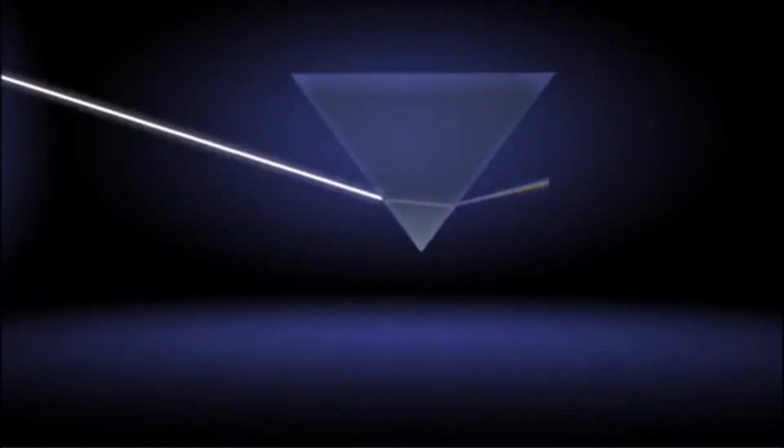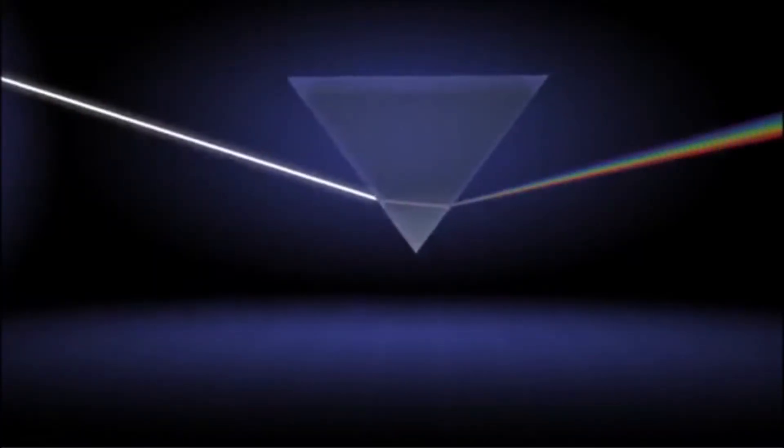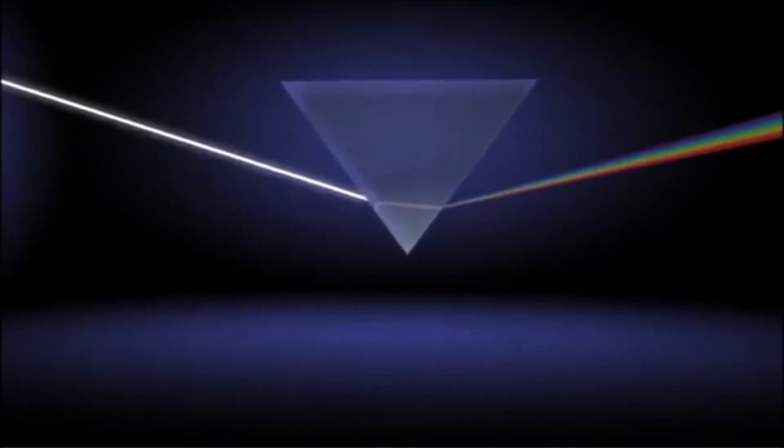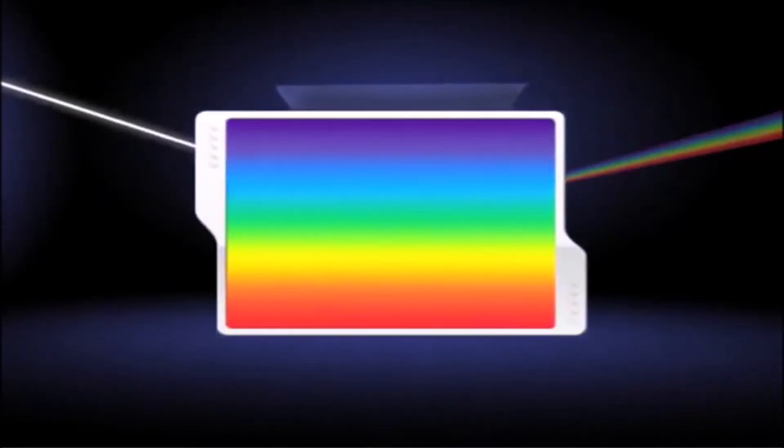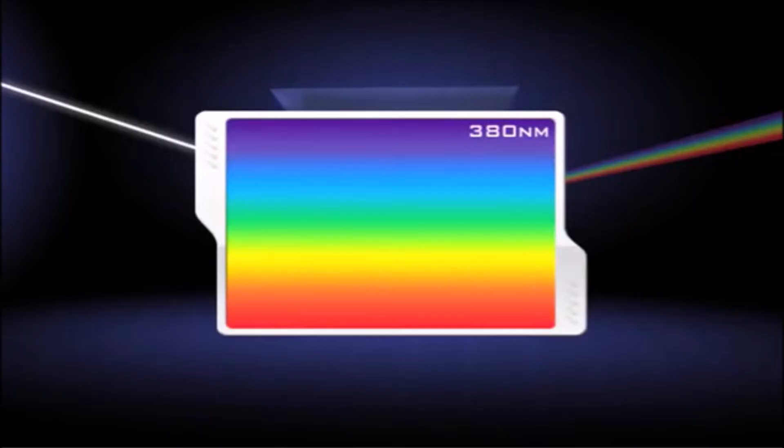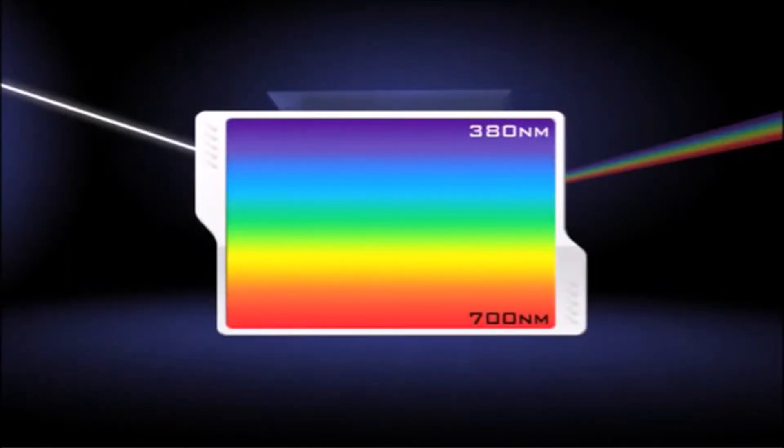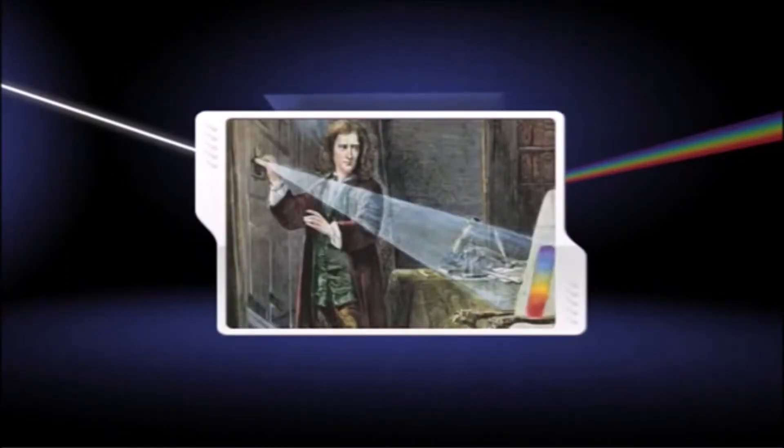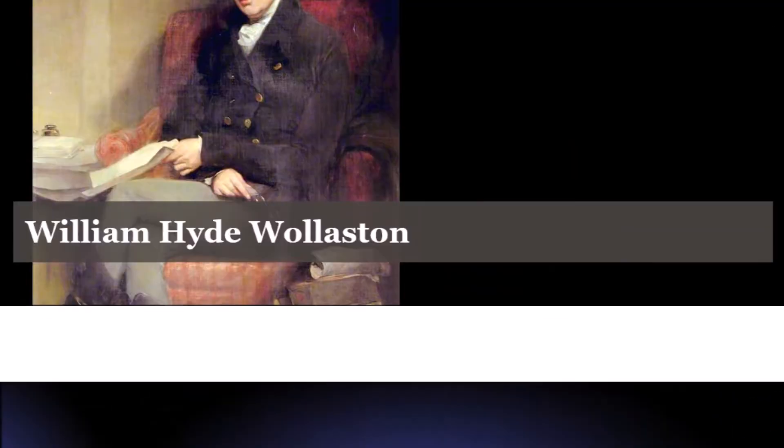It was the invention of spectroscopy that really revolutionized stellar classification. Spectroscopy, or breaking up light into individual wavelengths, began with Isaac Newton's experiments with prisms, where he demonstrated that ordinary sunlight was made up of all the colors of the rainbow.